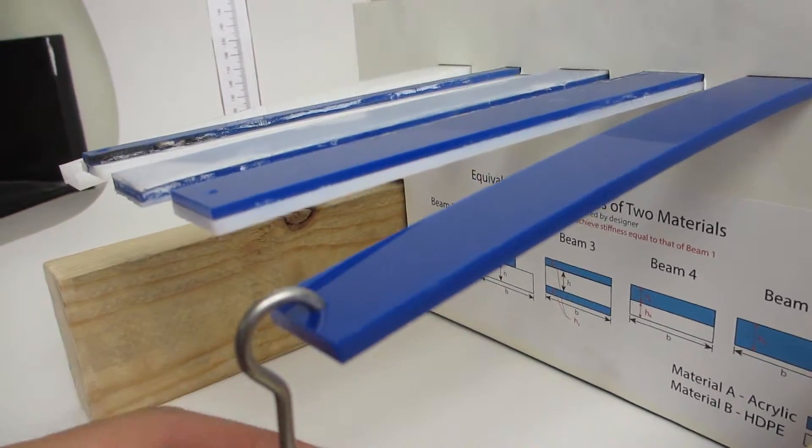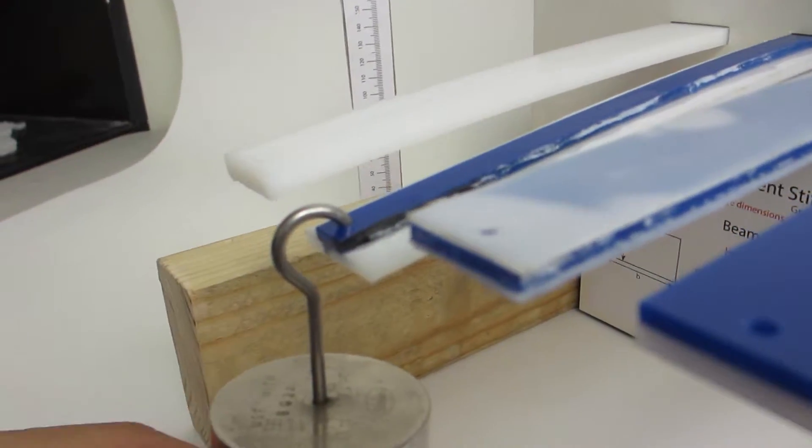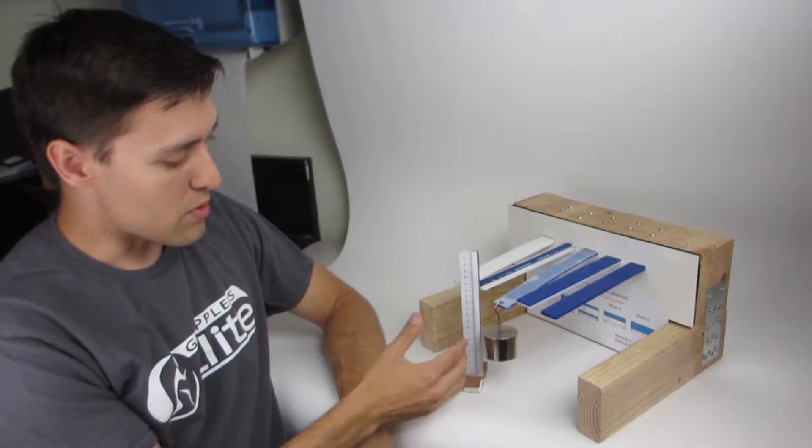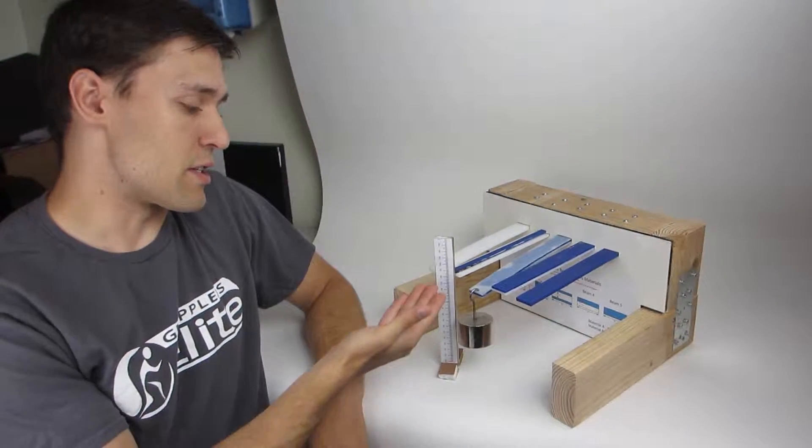So the way that we chose to demonstrate that was with a weight that we then will hang on one of the beams. And what we can do is see where the beam started on this scale and then see where it ended. And that way we know exactly how far it bent.